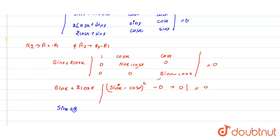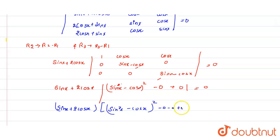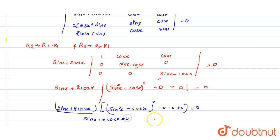Opening the expression, we have sin x + 2cos x times (sin x minus cos x) whole squared equal to zero. This gives two factors: sin x + 2cos x = 0, and sin x minus cos x = 0.